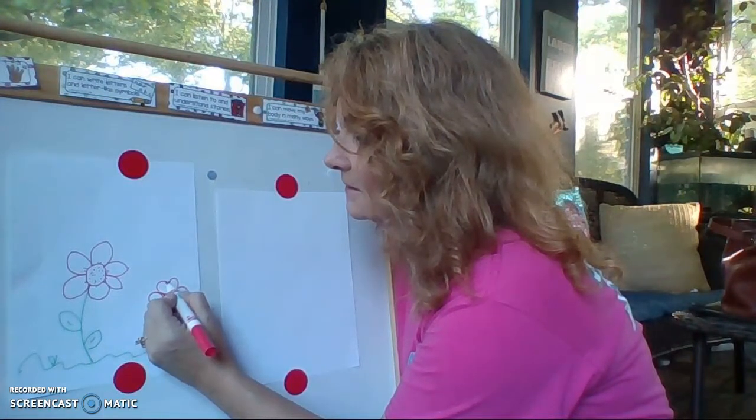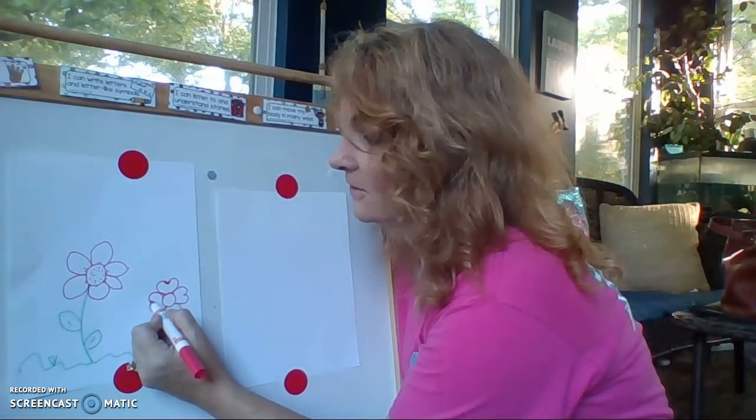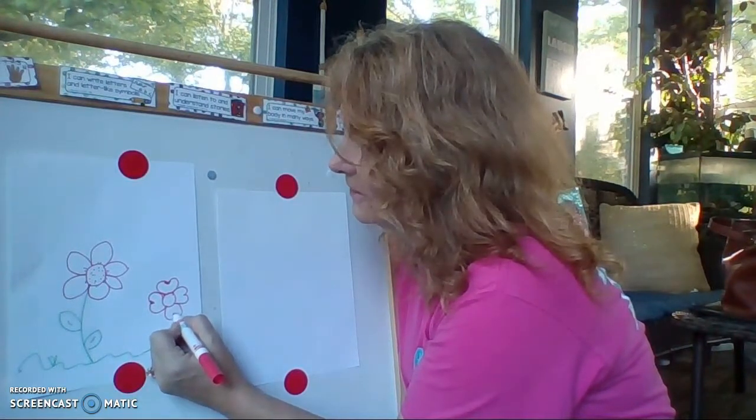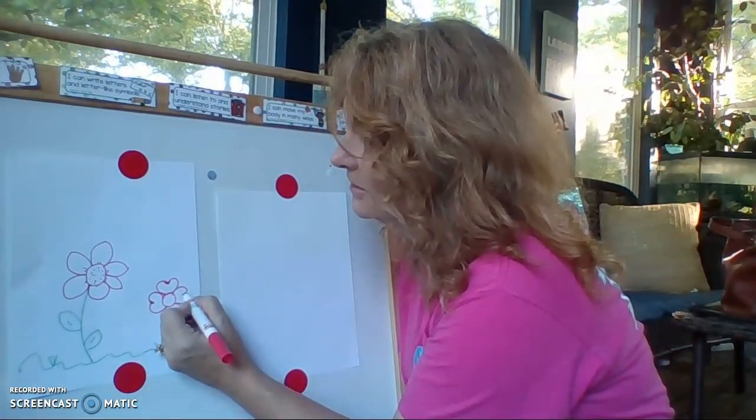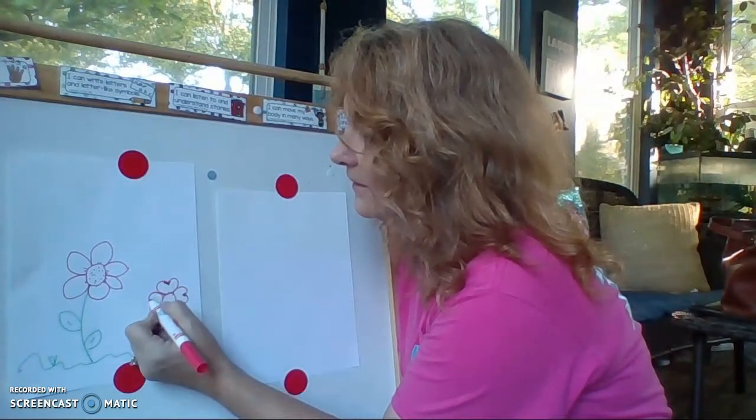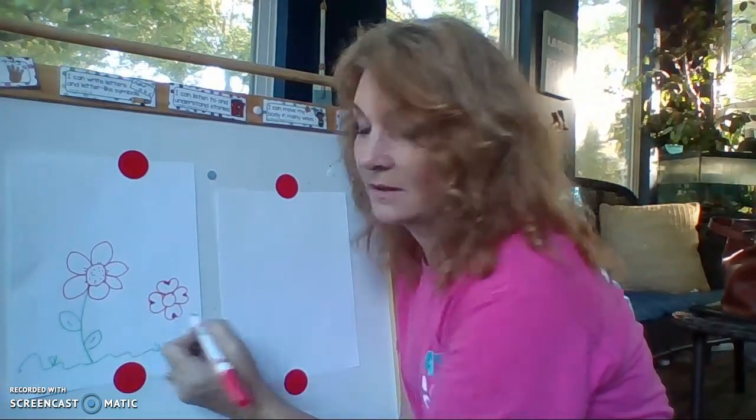And then if you kind of just go back around the little tips of your heart and fill it in, it kind of makes like a little dogwood flower, which is one of our trees here in North Carolina with the white flowers on them. They just bloomed and they looked beautiful.